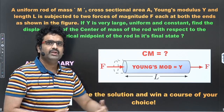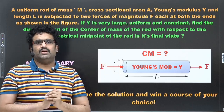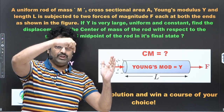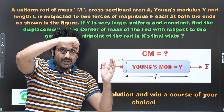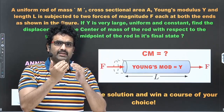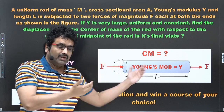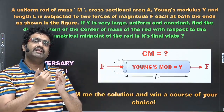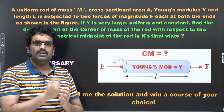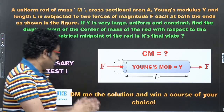As the rod moves and expands or compresses, we are supposed to consider the Young's modulus to be constant throughout the time. With those assumptions in place, find the displacement of the center of mass of the rod with respect to the geometrical midpoint of the rod in its final state — whether it has expanded, compressed, or remained the same. Whatever its final length is, it will have a geometrical midpoint, and you need to find whether the center of mass is at that midpoint, to the right, or to the left of it, and by what magnitude.